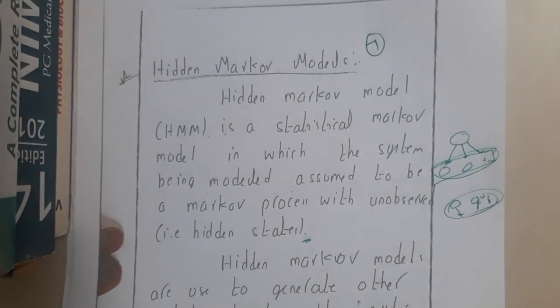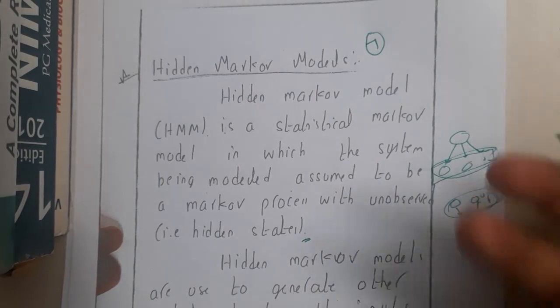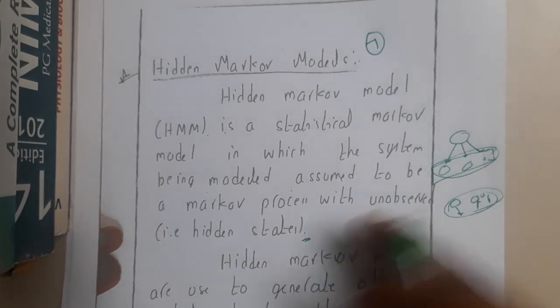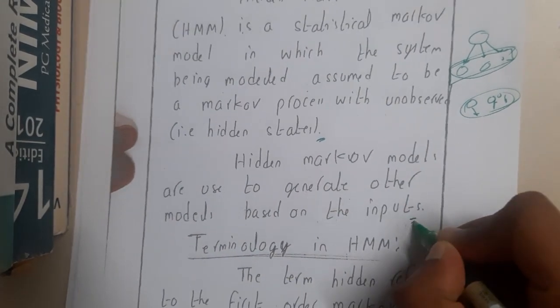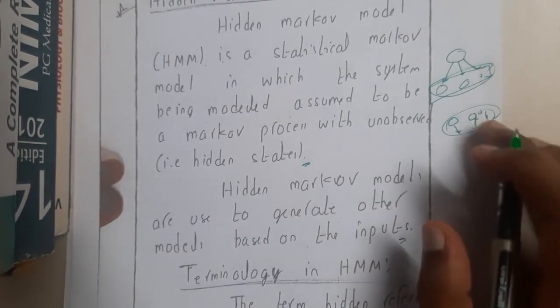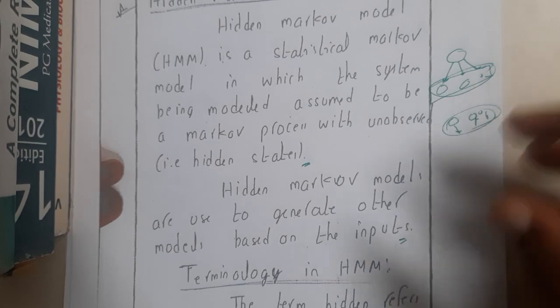Hidden Markov Models are used to generate other models. Based on the inputs, you can generate outputs and based on this concept you can generate some models.